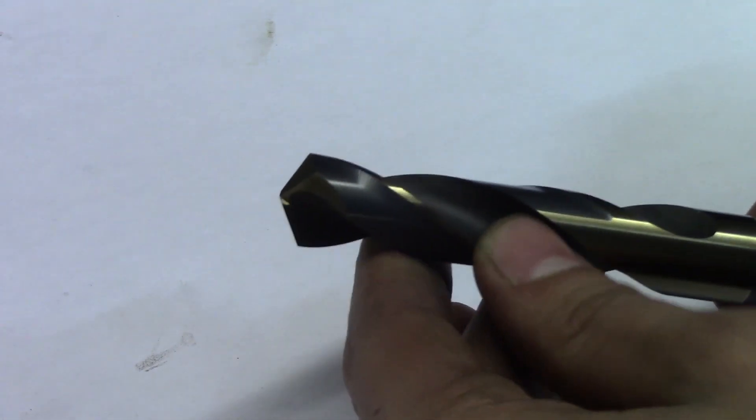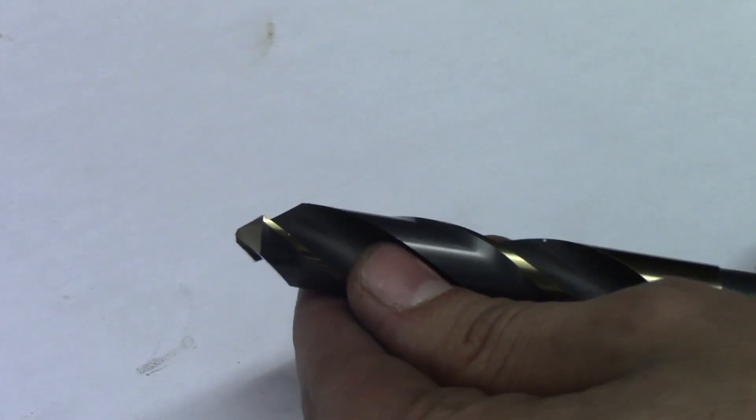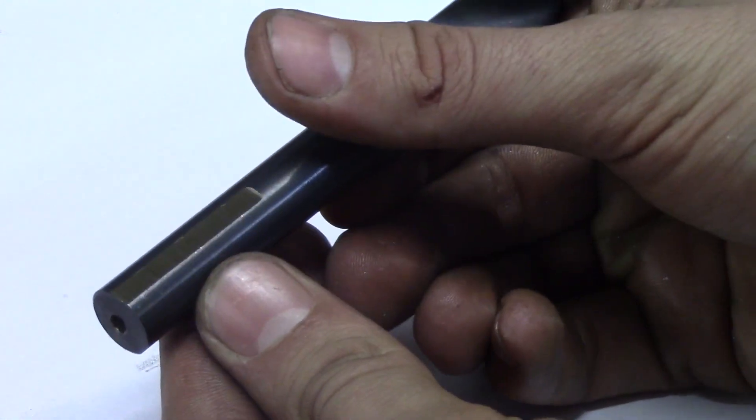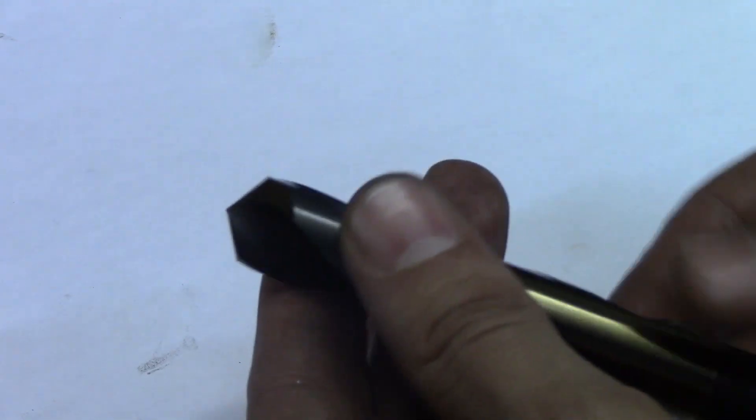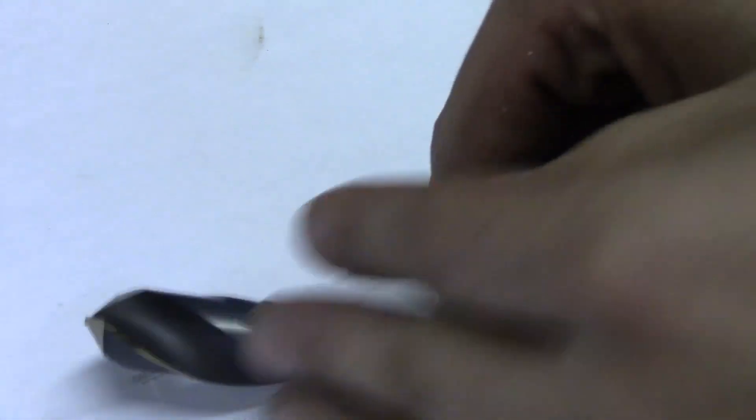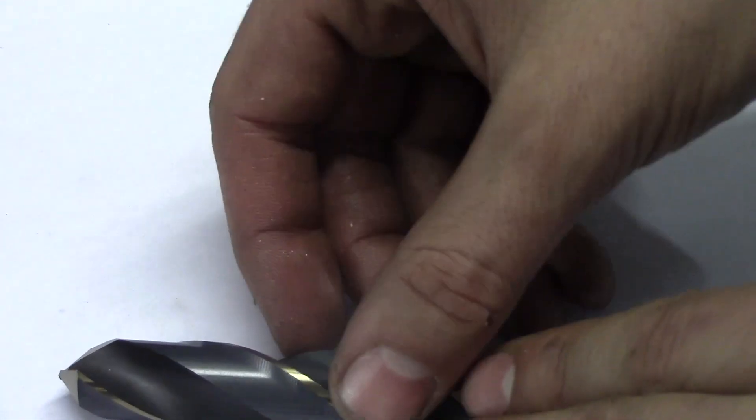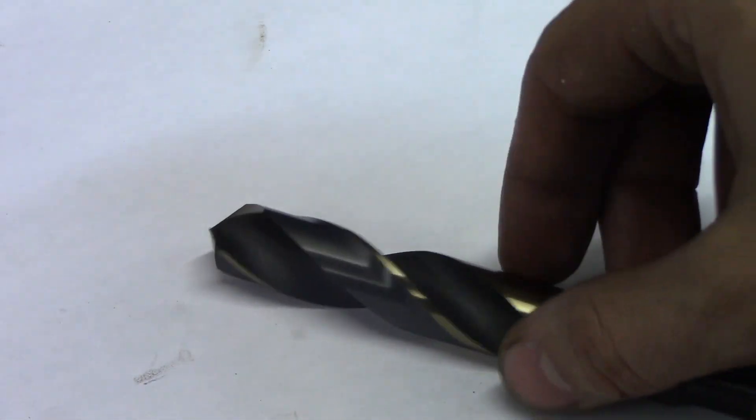Without any further ado, I'm going to put this in the drill chuck and make sure I'm clamping on the flats. Then I'm going to turn my spindle speed on about 200 or so. When using bigger drills on steel, you want to go slower. Anytime you hear a high chatter or if it's wobbling around too much, just slow it down. In the end, it depends on how sharp your tool is, what material you're cutting, and things of that nature.